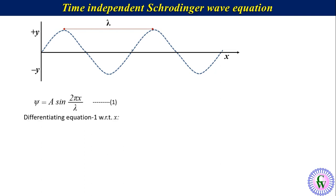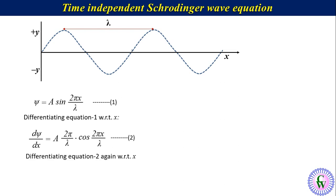Differentiation of equation 1 with respect to x gives dψ/dx equal to A(2π/λ)cos(2πx/λ), equation number 2. Differentiating equation 2 again with respect to x gives d²ψ/dx² equal to minus A(4π²/λ²)sin(2πx/λ), equation number 3.